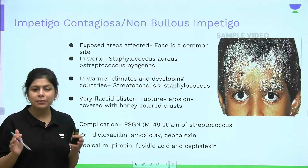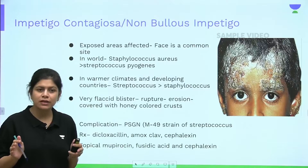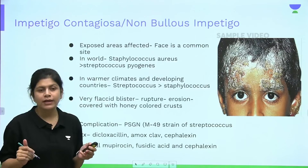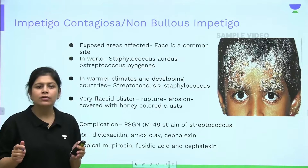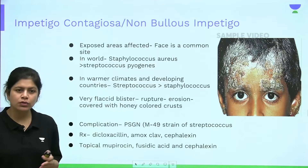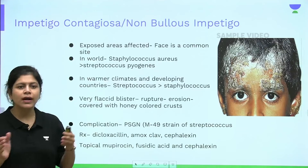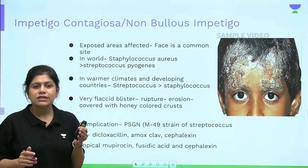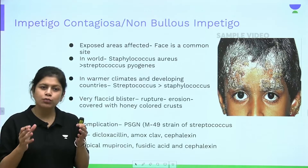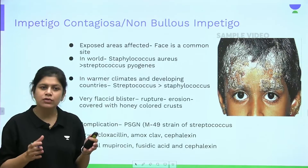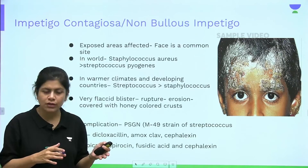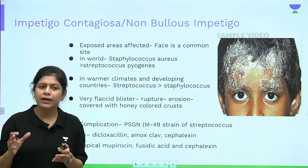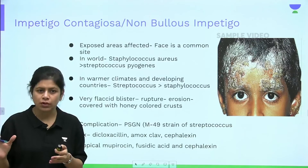The word 'impetigo' literally means 'to attack.' Impetigo can be of two types: non-bullous impetigo and bullous impetigo. Bullous impetigo is most commonly caused by staphylococci, while non-bullous impetigo can be caused by either staphylococci or streptococci.